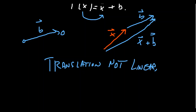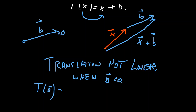I should mention that translation vectors are not linear transformations. Translations are not linear when your translation vector B is not zero. The issue is that if you take the translation of the zero vector, this maps to zero plus B, which equals B, which is not zero. Every linear transformation maps zero to zero, but translations don't do that.